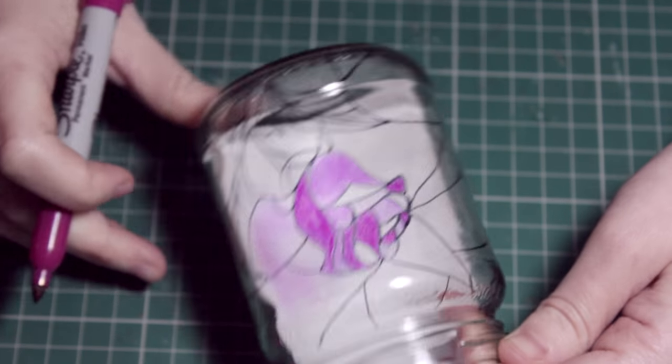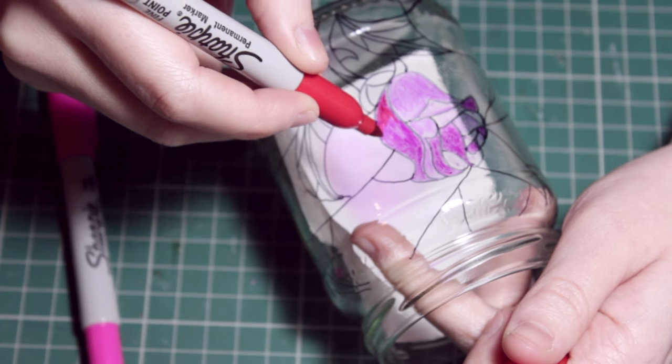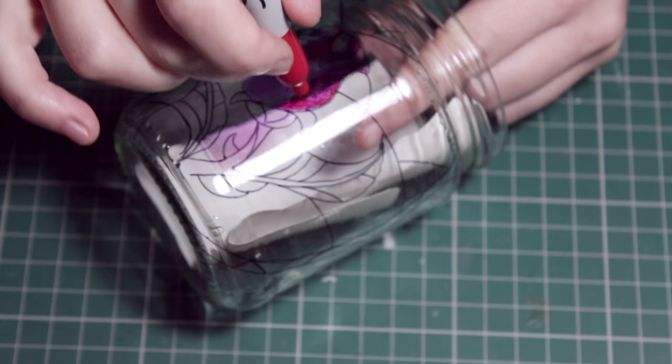But then afterwards I'm going to be taking a red and I'm going to be using this on the edges. So I'm just going to start at the bottom, go around a little bit, and then to blend it out because it is a little hard to blend out with these on the glass, I'm just going to be doing little dots.